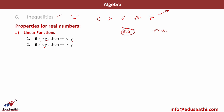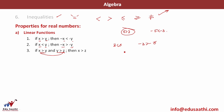If x is less than y, then minus x would be greater than minus y. So 3 is less than 5, and minus 3 would be greater than minus 5. The next property: if x is greater than y and y is greater than z, then x will also be greater than z. For example, 8 is greater than 5, and 5 is greater than 3, so 8 is also greater than 3.